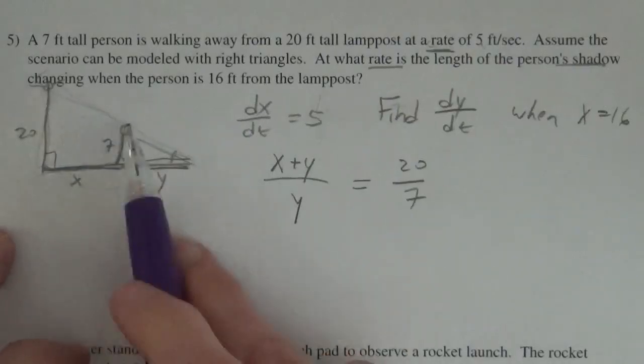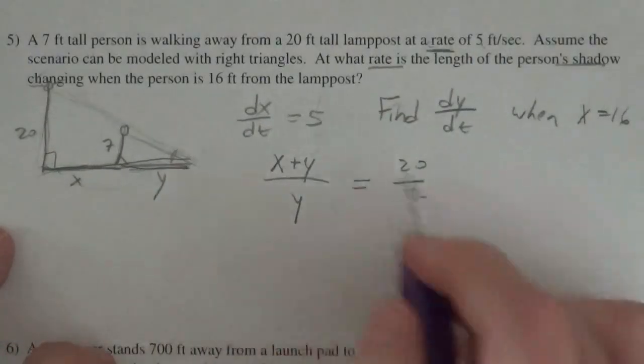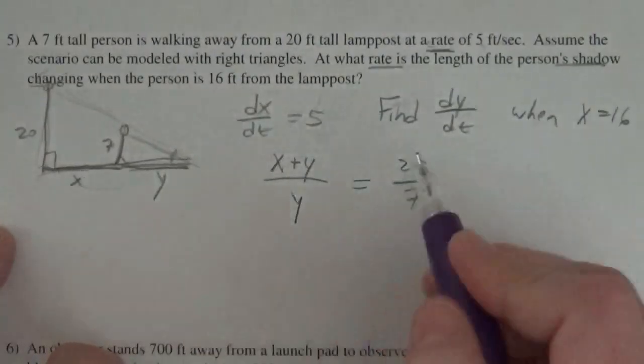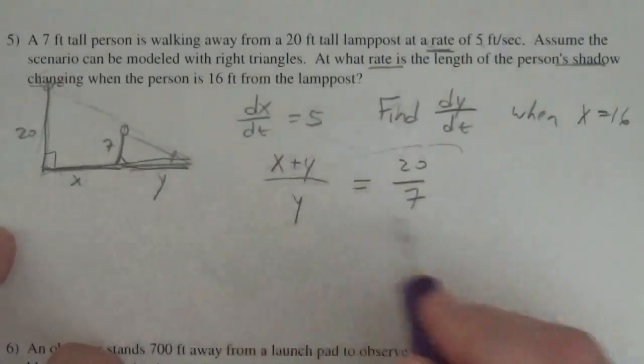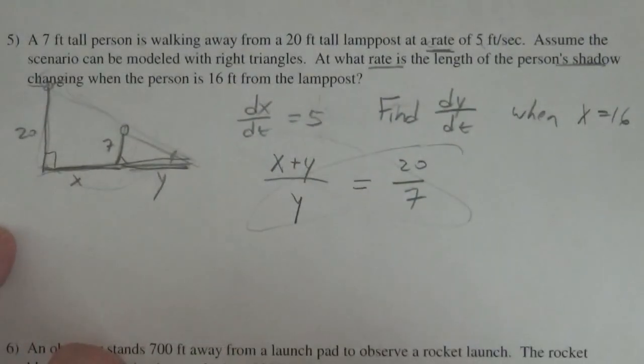So big to little equals big to little. You can set this proportion up however you want as long as you've got a method to your madness because the diagonals will always end up being the same.